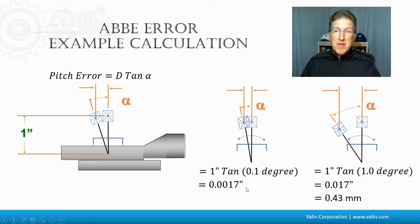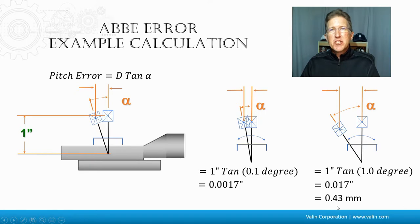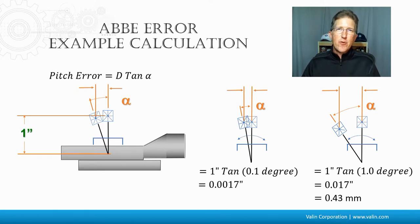That's not very big. But if we multiply that by 10 — one degree of angular error — the tangent of that times one inch gives 0.017 inches. Again, not very big, but in millimeters that's almost half a millimeter: 0.43 millimeters. If you're trying to position down to the micron level, 0.43 millimeters — 430 microns — is huge, and that's an error that has to be accounted for.